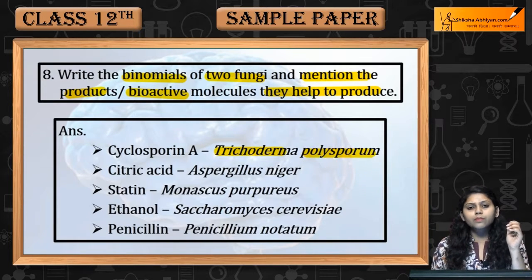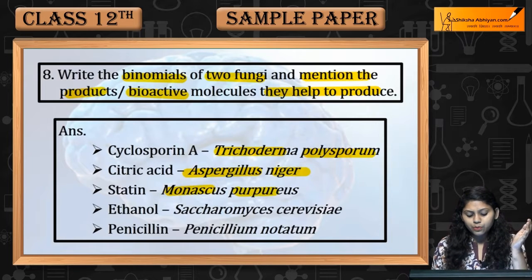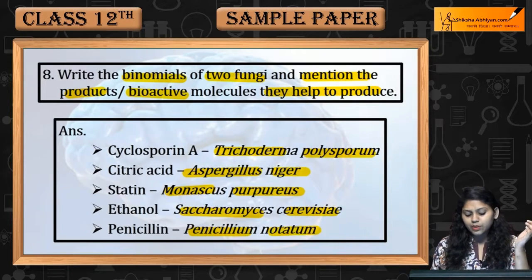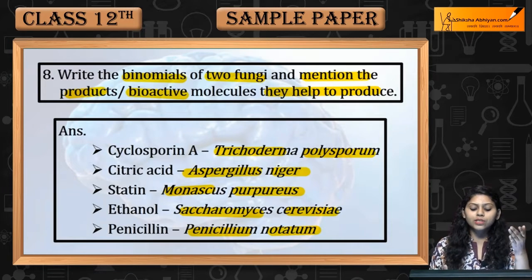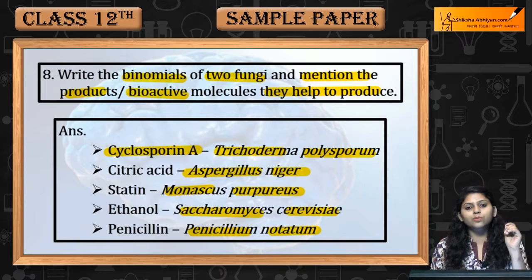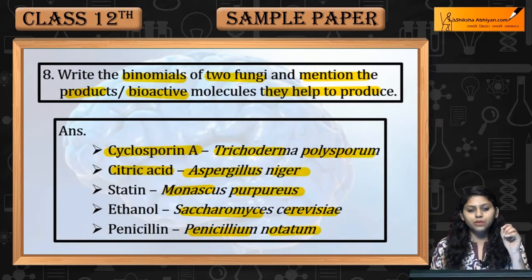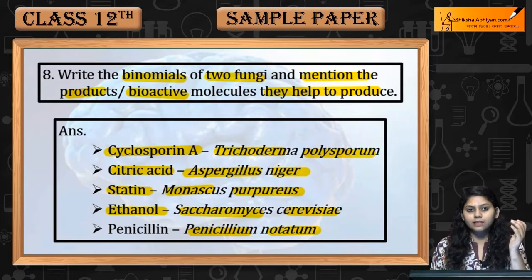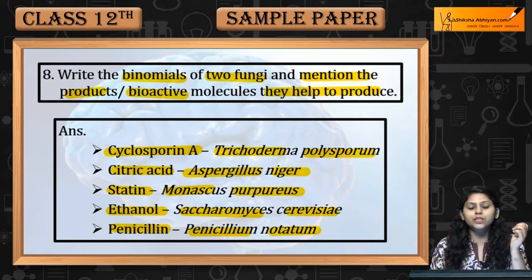Trichoderma polysporum, Aspergillus niger, Monascus purpureus, Saccharomyces cerevisiae, Penicillium notatum — these are five fungi and their products: Trichoderma produces Cyclosporin A, Aspergillus niger produces citric acid, Monascus produces statins, Saccharomyces produces ethanol, and Penicillium produces penicillin.